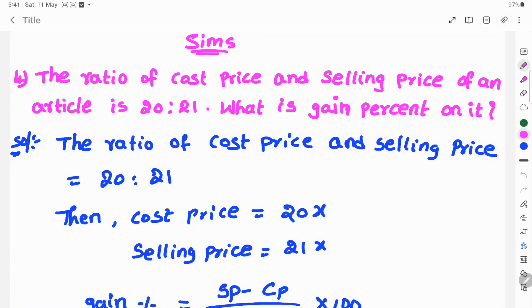Hi, welcome to Sims. Today's problem: the ratio of cost price and selling price of an article is 20 to 21. What is the gain percent on it?